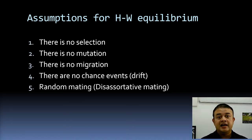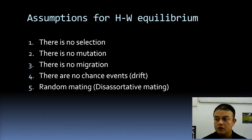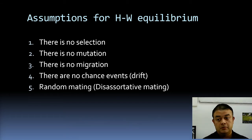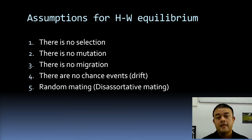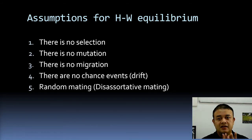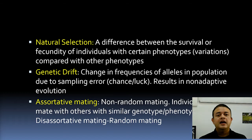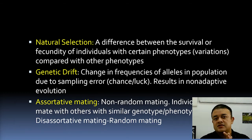The second assumption is that mutation is very weak. However, mutation is important because it provides genetic variation — and variation is the raw material for selection to act upon. That is why mutation is also a really important assumption. Now let us consider the first assumption: natural selection.